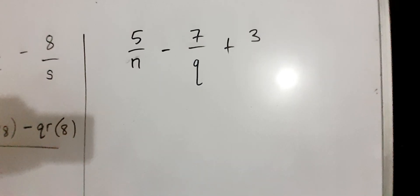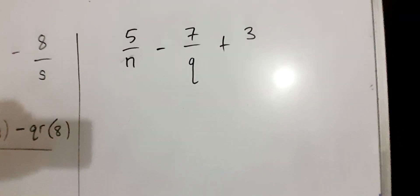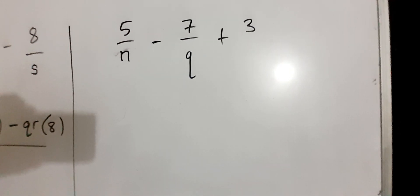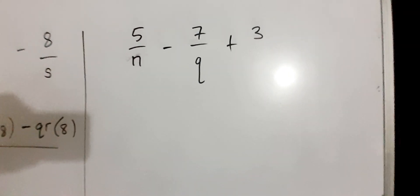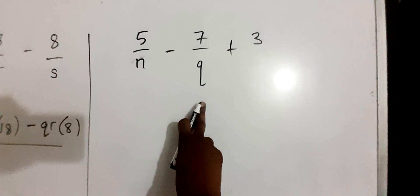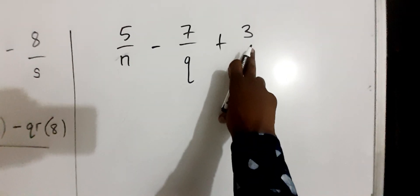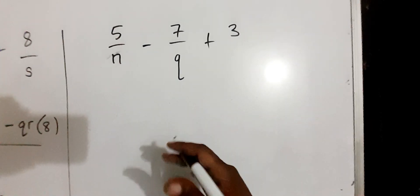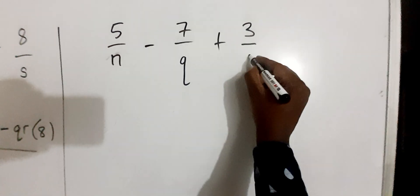The next question: 5 over N minus 7 over Q, plus 3. Now, this is a fraction, this is a fraction, and this is a whole number, but we have to make it a fraction, so you then say over 1.